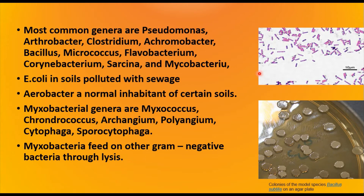The most common genera are Pseudomonas, Arthrobacter, Clostridium, Achromobacter, Bacillus, Micrococcus, Flavobacterium, Corynebacterium, Sarcina, and Mycobacterium. E. coli is seen more in soils polluted with sewage — if E. coli is found in large numbers in a soil, that soil was likely contaminated with sewage. Agrobacterium is a normal inhabitant of certain soils. Myxobacterium genera like Myxococcus, Chondrococcus, Archangium, Polyangium, Cytophaga, and Sporocytophaga are present in soil, and these Myxobacteria feed on other gram-negative bacteria through the process called lysis.